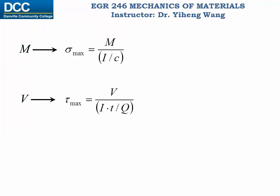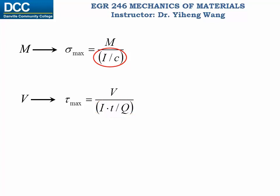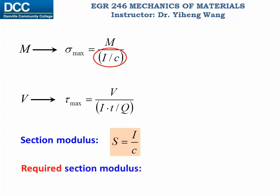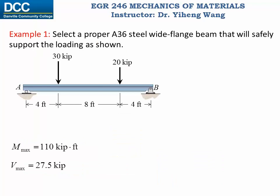At this point we should all be very familiar with the flexure formula as well as the shear formula. These formulas can be rewritten to clearly demonstrate that the stresses are caused by the internal reactions on the numerator and resisted by the combined geometric properties on the denominator. Since the bending stress is dominant, we define a new geometric property that combines these two — the section modulus S — which simply equals I over C for a given cross section. In the design process we derive from the flexure formula that the required section modulus equals the maximum bending moment divided by the allowable normal stress.